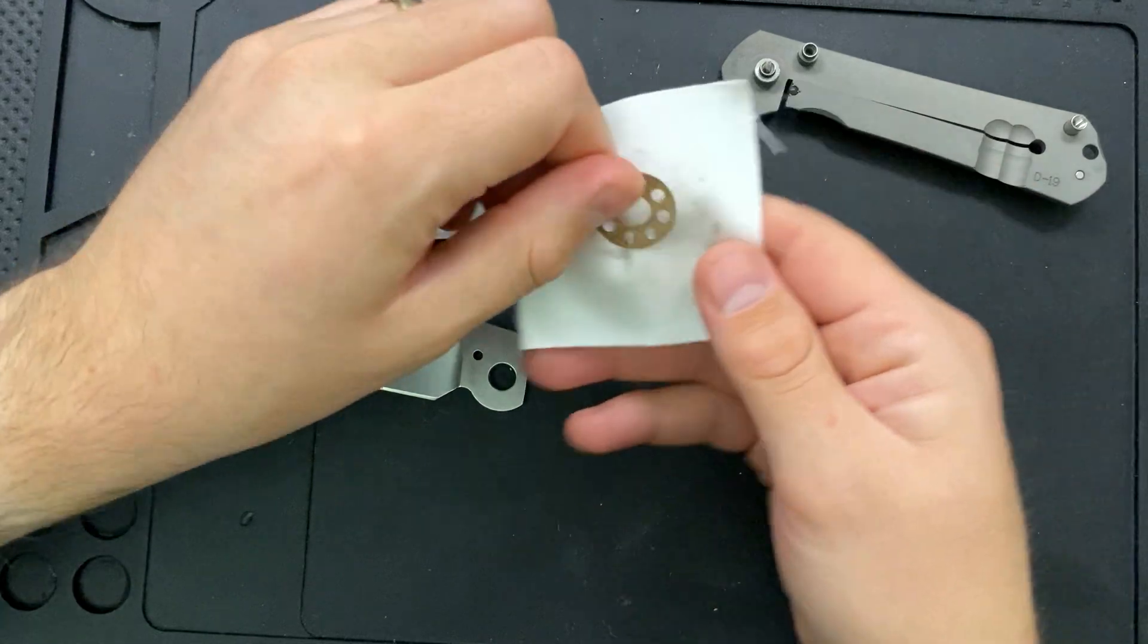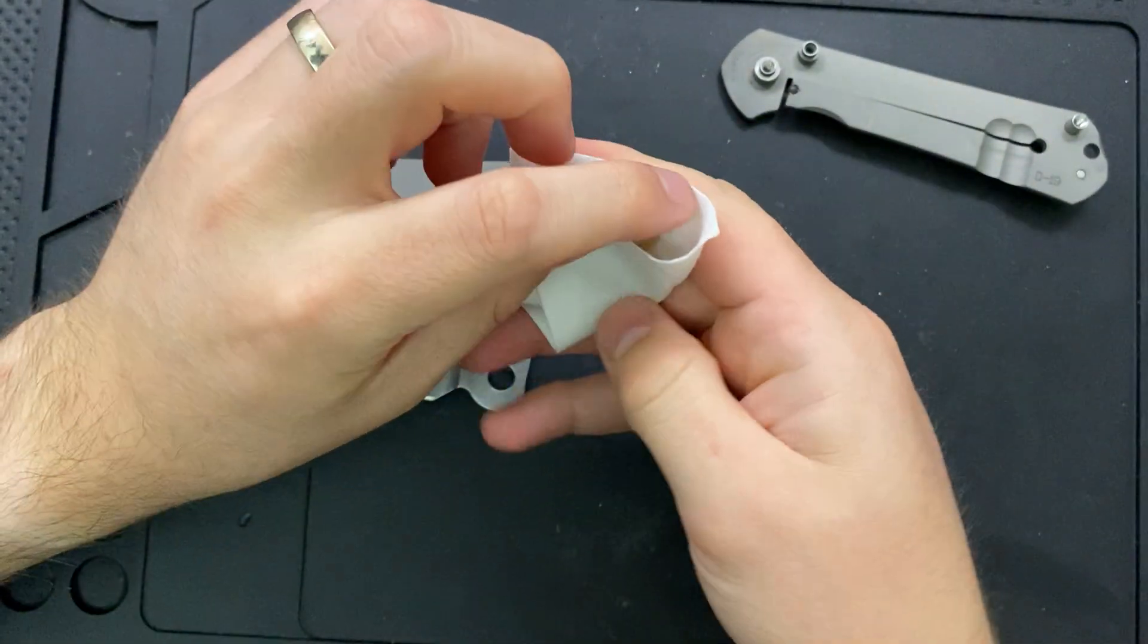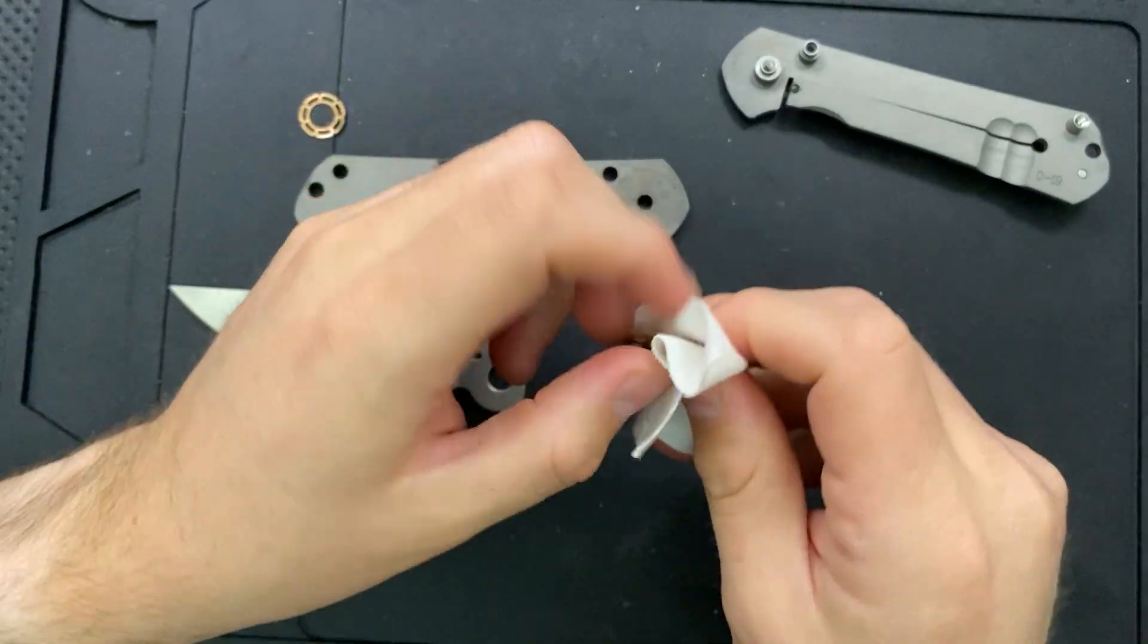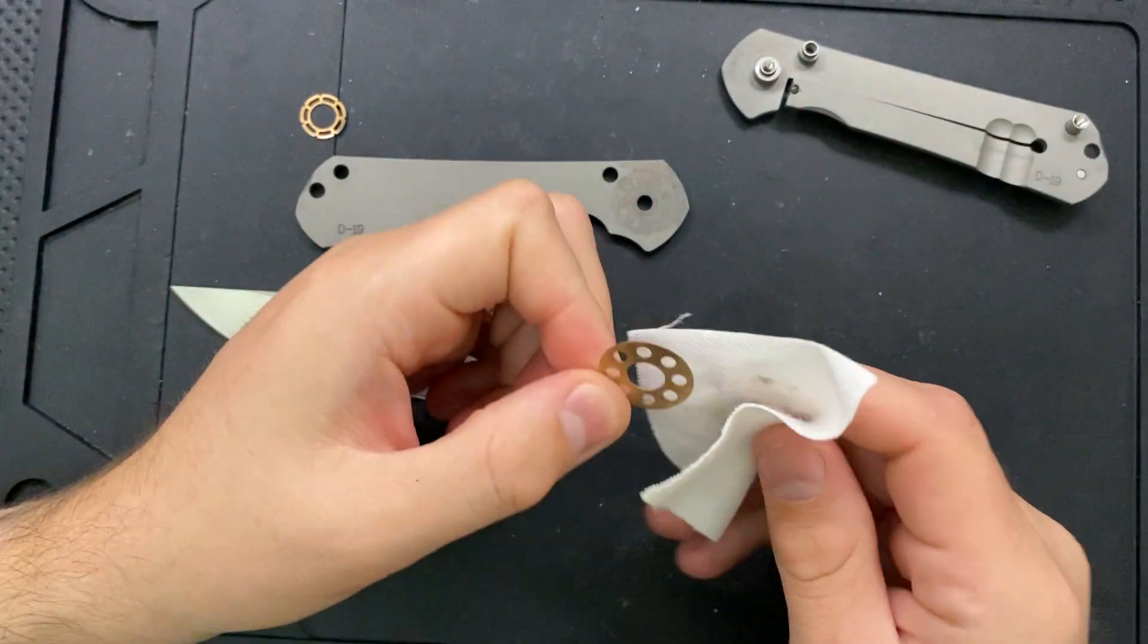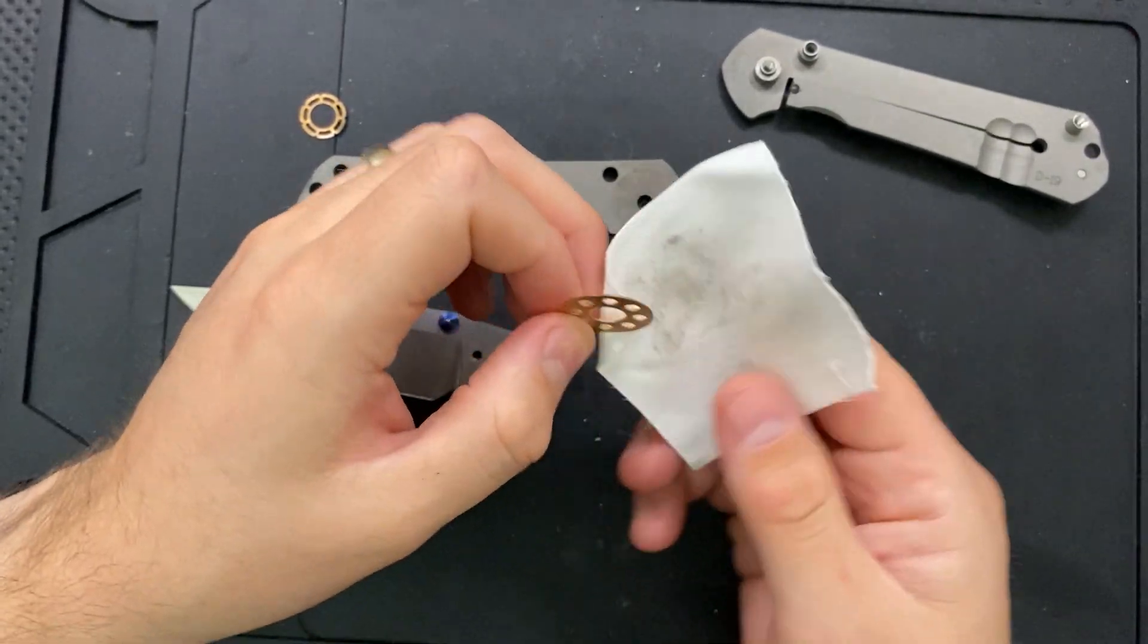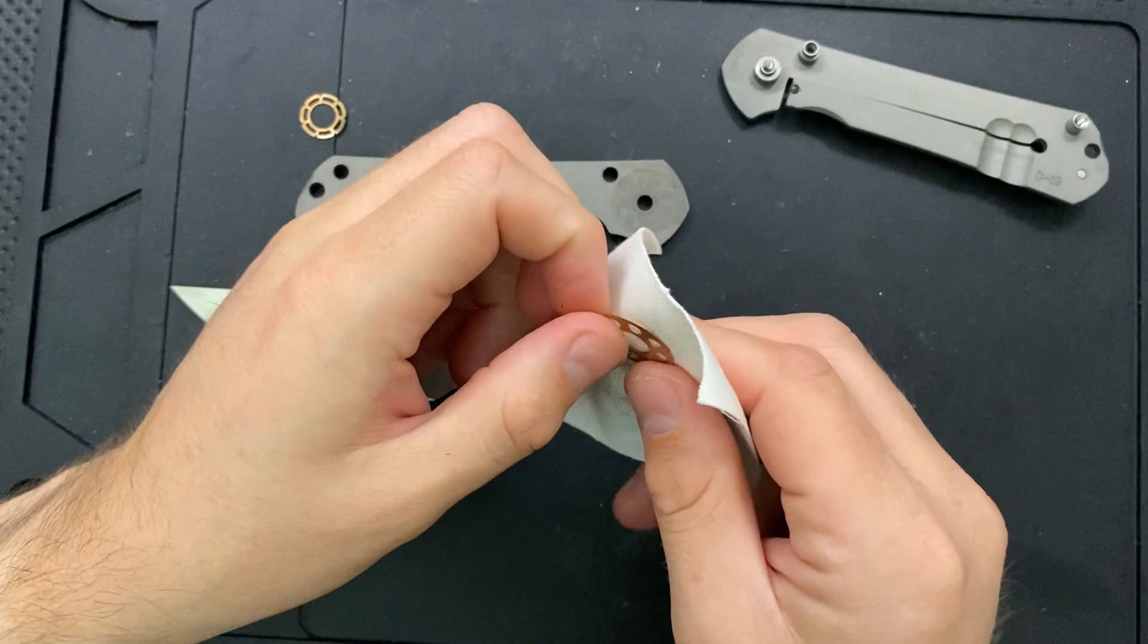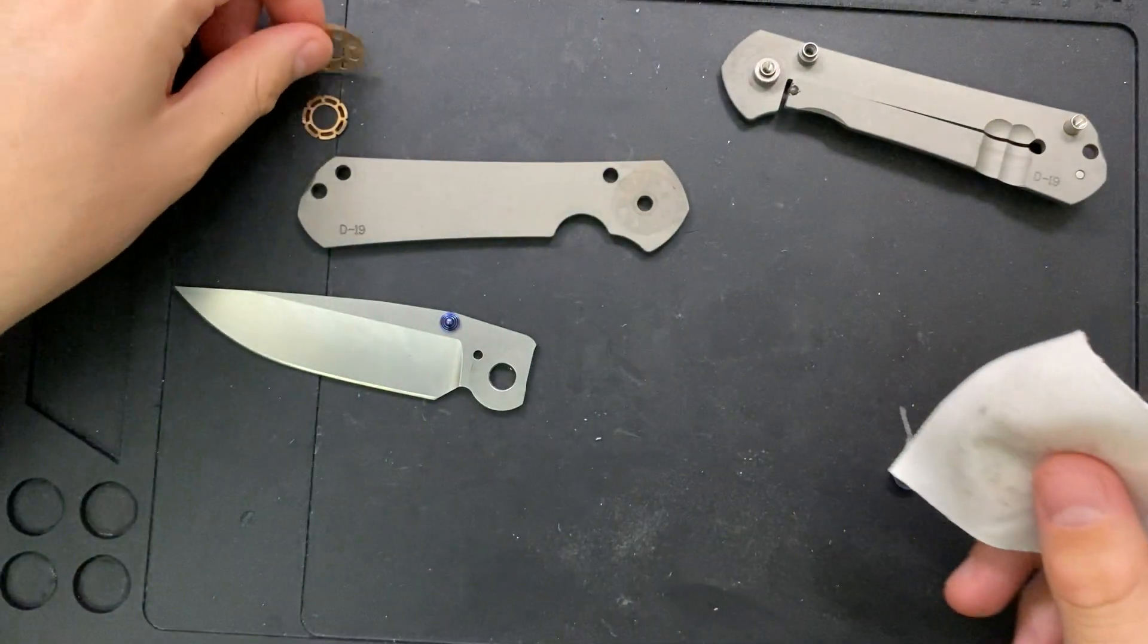This is nice in some ways in that it's solid, but it also means that there cannot be lockstick. Because to the best of my knowledge, a ceramic ball will not stick to titanium. It's not how lockstick works, not how any of this works. But nonetheless, that's a factor. And so that's one of the main differences we see here.